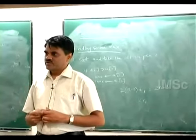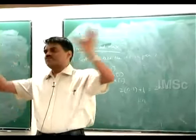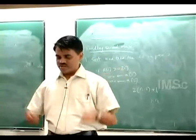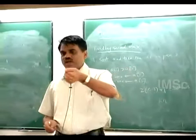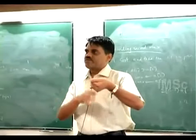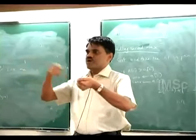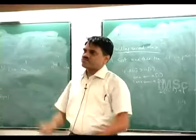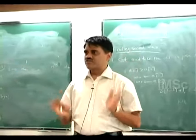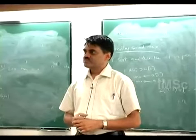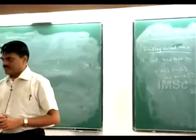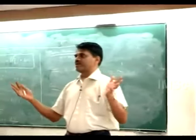Let us go back to max finding. Give me a different algorithm for finding max. One algorithm is: make the first element the largest, then go through the loop comparing everybody with it and get the max — that is again n minus 1 comparisons, sequential. Can you think of a different algorithm? This is like running a tournament.